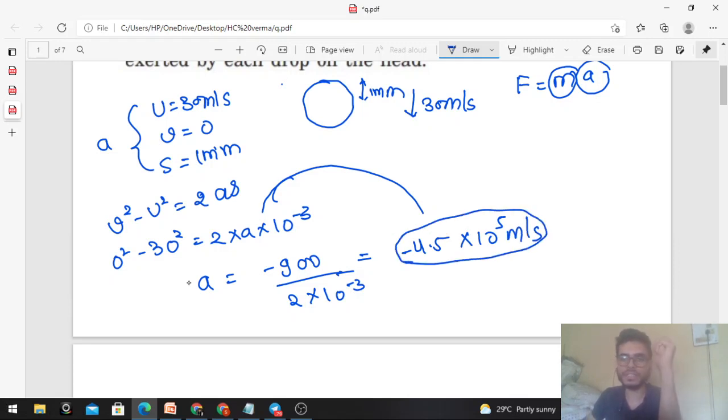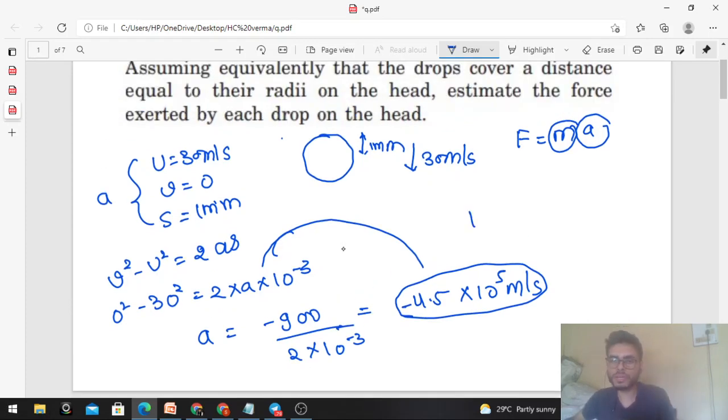Negative because the acceleration is opposite to the direction of motion of the raindrop. If the raindrop is moving downward, the acceleration is upward.